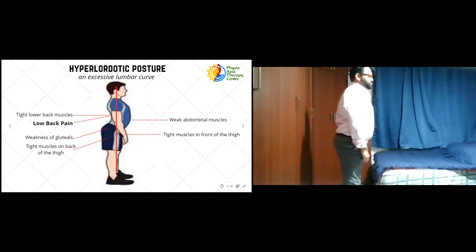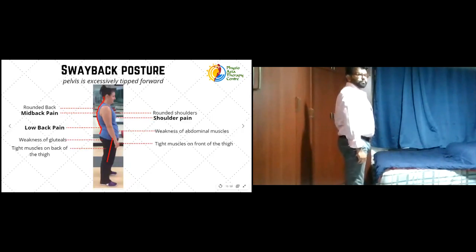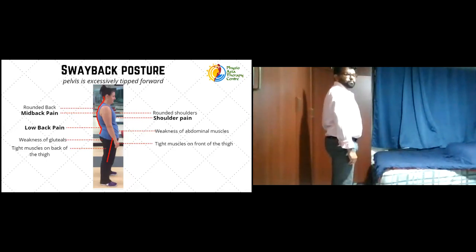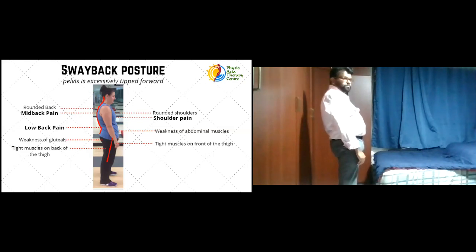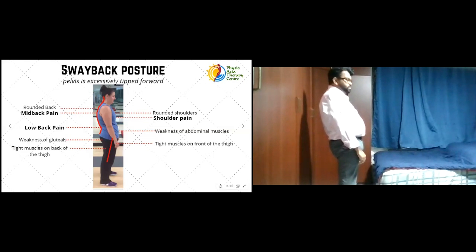The next posture is the sway back posture, defined as the pelvis or hips excessively tipped forward — the complete opposite of the hyperlordotic posture. This is usually seen in pregnant women and those who are overweight. Shannon demonstrates this posture by pushing the pelvis forward. In this position, the low back compensates by increasing its arch, which leads to tightness of the low back muscles and eventually low back pain.